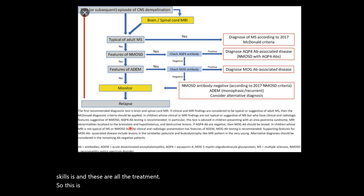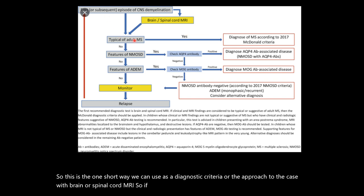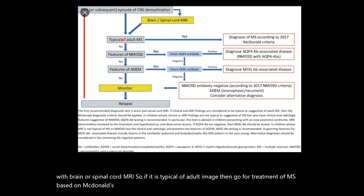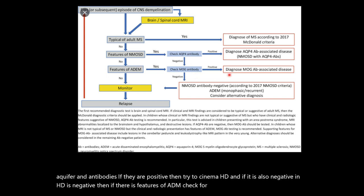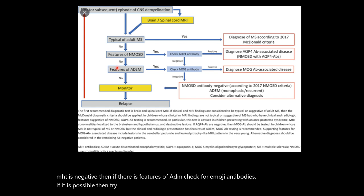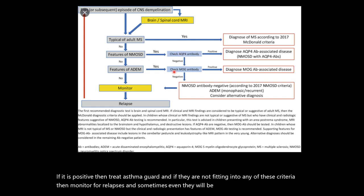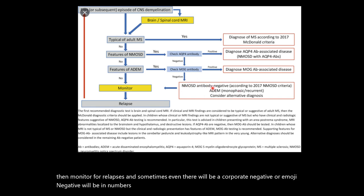This diagnostic chart can be used as an approach to cases with brain or spinal cord MRI. If typical of adult MS, treat based on McDonald's criteria. If not, check for NMOSD features and aquaporin-4 antibodies — if positive, treat as NMOSD. If negative, check for ADEM features and MOG antibodies — if positive, treat as MOGARD. If none fit, monitor for relapses; note that aquaporin-negative or MOG-negative NMOSD also exists. Consider alternative diagnoses and check for ADEM.